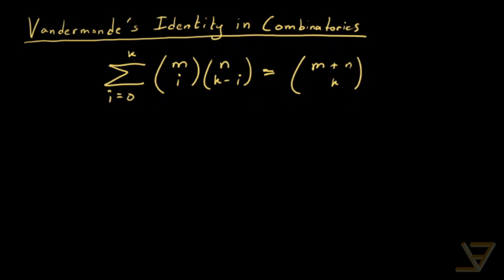There's actually a fairly simple proof of this if we use a combinatorial proof. Before we do that, let me mention that m is an integer greater than or equal to 0, n is also a non-negative integer, and k is a non-negative integer.